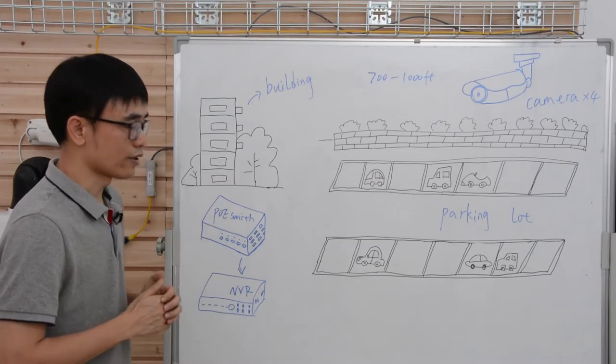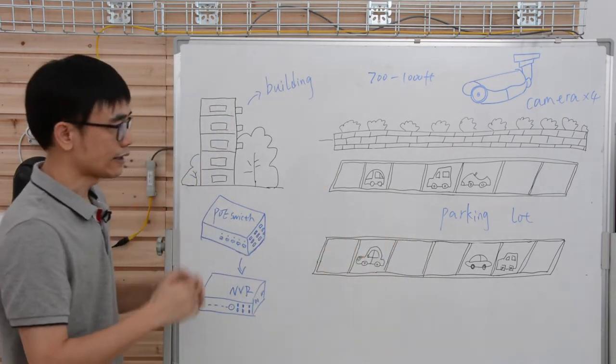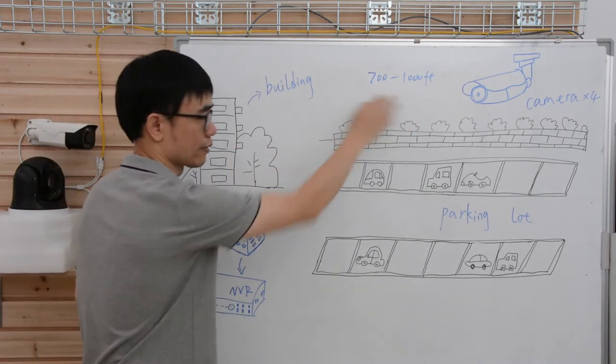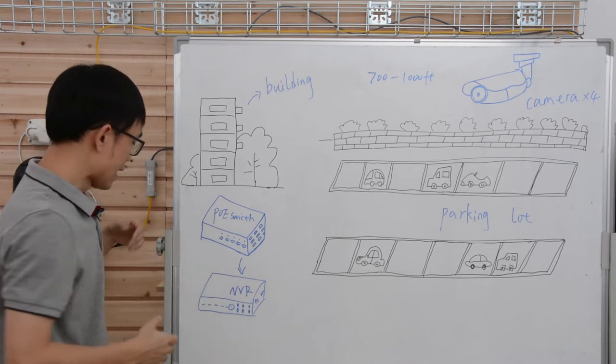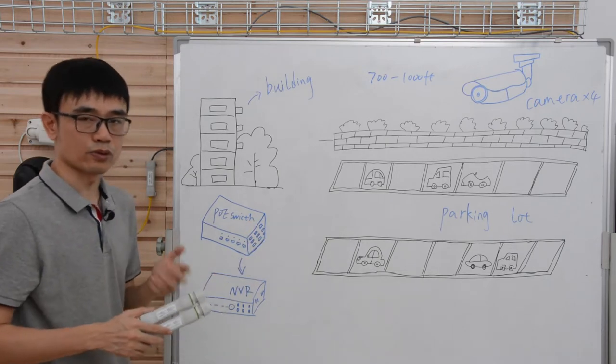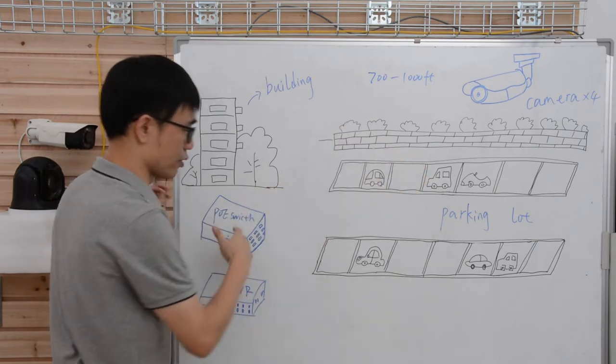This is the case from the customer. He needs to install four cameras around the parking lot. And the distance between the cameras to the PoE switch is about 700 feet to 1000 feet. If you just use Cat5 or Cat6 Ethernet cable, he would need to daisy chain PoE extenders to each of these links. One link with two PoE extenders, totally he's got eight PoE extenders between the cameras and the PoE switch.